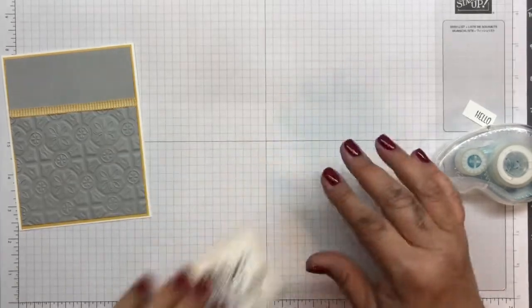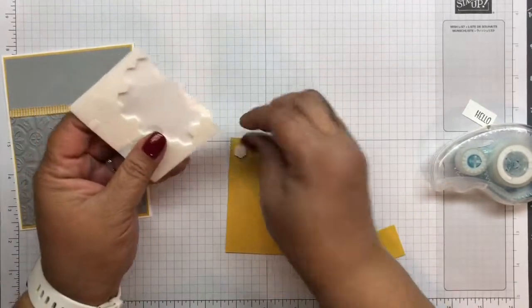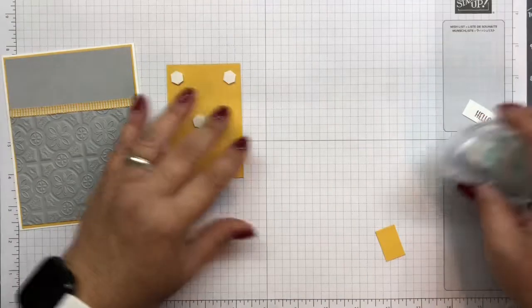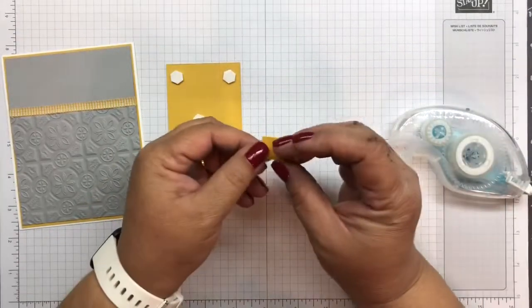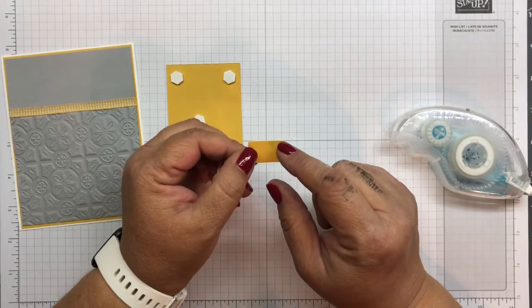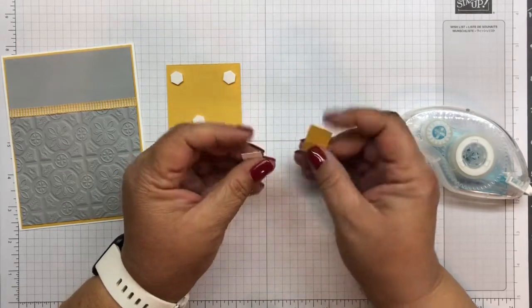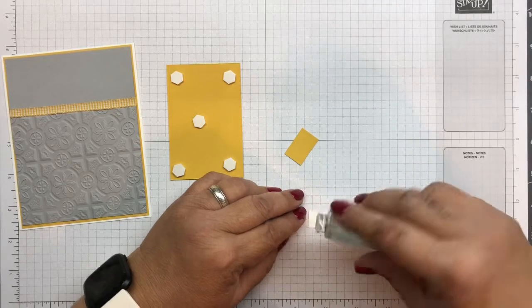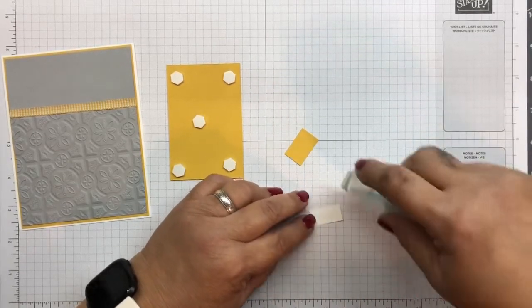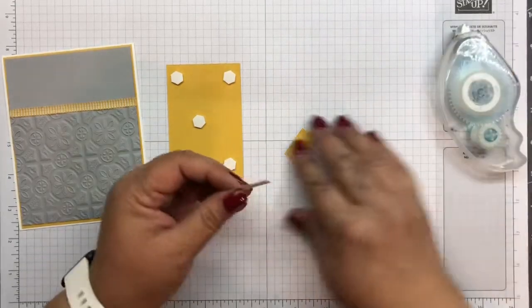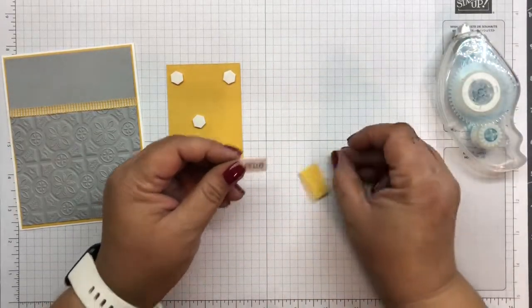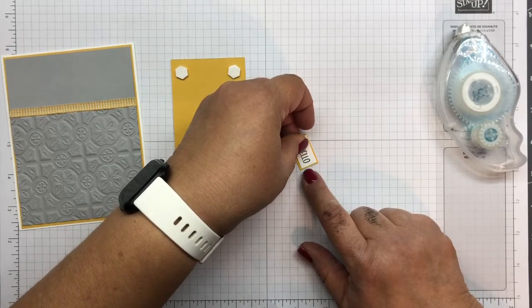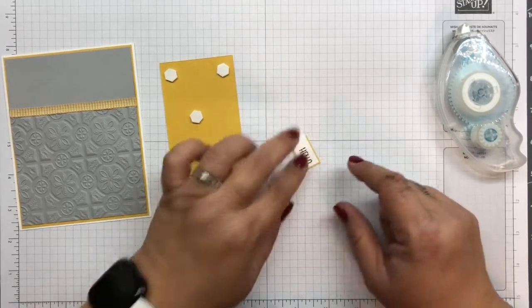Like that. And then we're just going to take some dimensionals and put on the back to give it a little bit of height, but we don't take off the backing just yet. So now we're going to take this hello and this piece of Bumblebee is cut at five eighths by an inch. And so we're just going to take our adhesive and put on the back of this. It doesn't like little pieces, I don't know. I just did this. There we go. I don't know what it is, guys. Alright, so we're going to take and we're going to layer it like this. Yeah, like this. I was going to put it all the way to the edge but I decided not to.